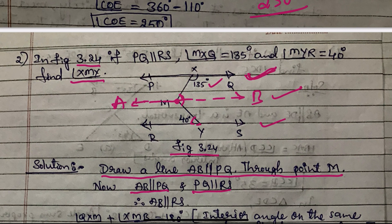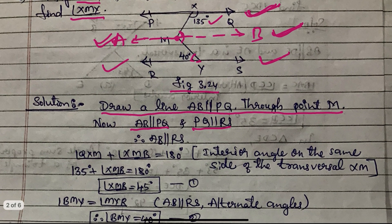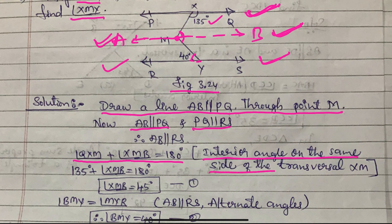AB is parallel to PQ, and PQ is parallel to RS, therefore AB is also parallel to RS. By using this, angle QXM plus angle XMB equals 180 degrees — interior angles on the same side of the transversal XM. Substituting the value, we get angle XMB equals 45 degrees.